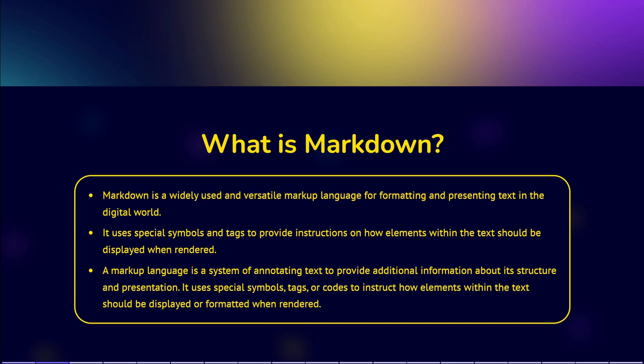At its core, Markdown is all about simplicity and accessibility. Its syntax is intentionally straightforward, making it easy for beginners to grasp. The use of familiar symbols like asterisks, underscores, and hash symbols to denote formatting elements such as bold, italic, headers, and lists further enhances its user-friendliness.